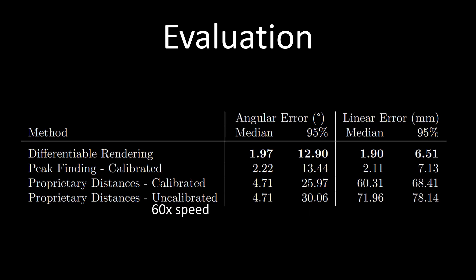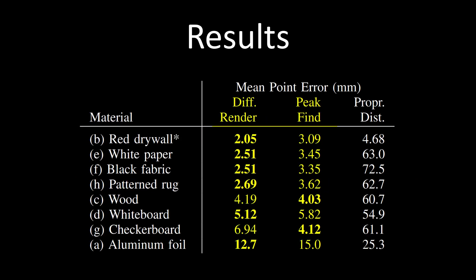We find that on this data set, the methods which utilize transient histograms directly outperform those which utilize only proprietary distance estimates. We also find that our techniques are more robust to changes in surface than those which use proprietary distance estimates.